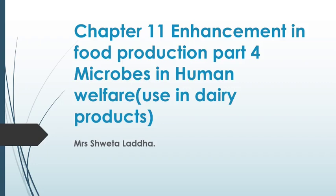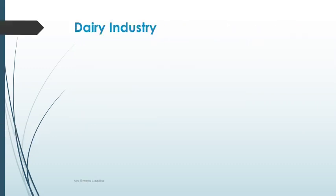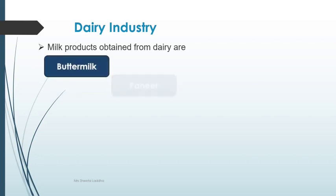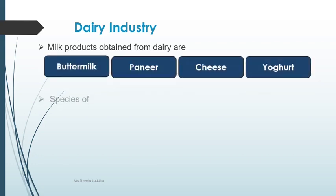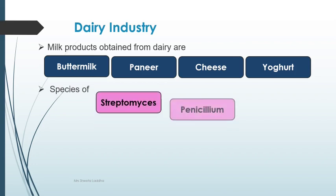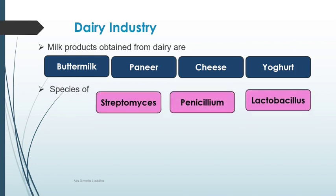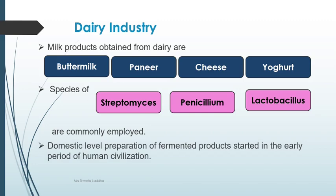Welcome to Chapter 11 - Enhancement in Food Production, Part 4. Today we are going to study how microbes are used in preparing dairy products. Milk products obtained from dairy are buttermilk, paneer, cheese, yogurt, etc. Species of Streptomyces, Penicillium, and Lactobacillus are commonly employed for the manufacturing of various types of dairy products.